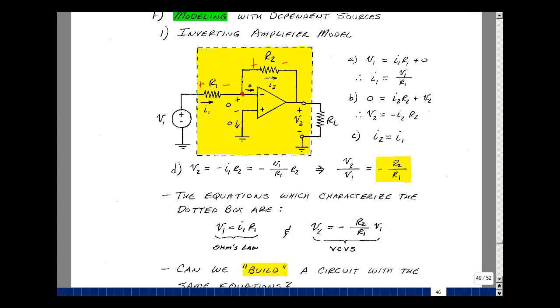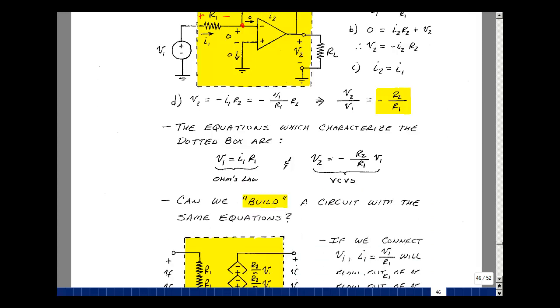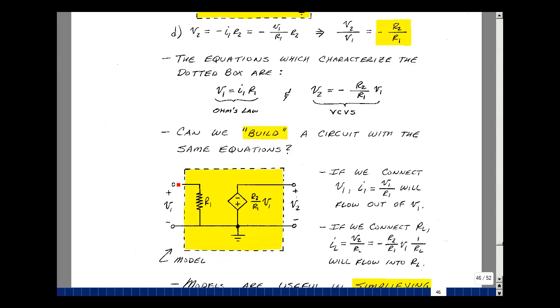Let's try to put together a model that would have the same equations. Between the terminals where V1 is, I'm going to put a resistor R1, and if I apply a voltage V1, a current is going to flow. I'll call it I1, and it's going to be equal to V1 divided by R1, the same equation we had above. The output voltage is equal to minus R2 over R1 times V1. I'll just flip the sign of this controlled source so that this node voltage V2 is equal to minus R2 over R1 times V1.